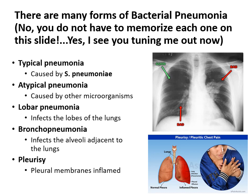There are various different forms of pneumonia — you don't have to memorize all of them. There's typical and atypical pneumonia, and there's also a breakdown of lobar, broncho, and pleurisy, which specifies what part of the lungs is infected. Those last three are not about what bacteria is causing it but rather the localization of the infection.